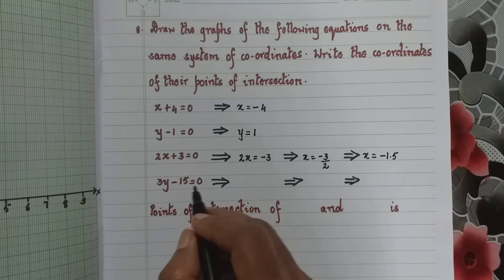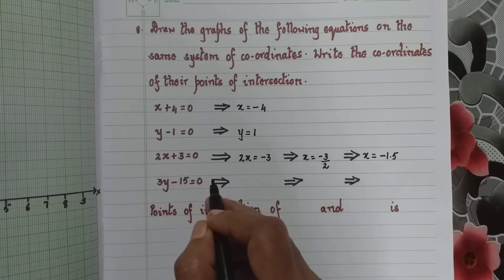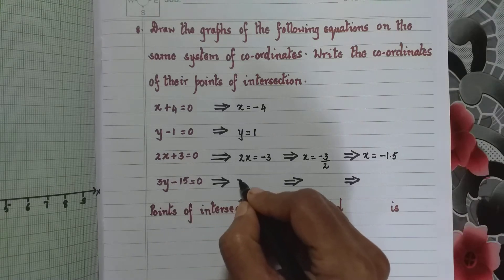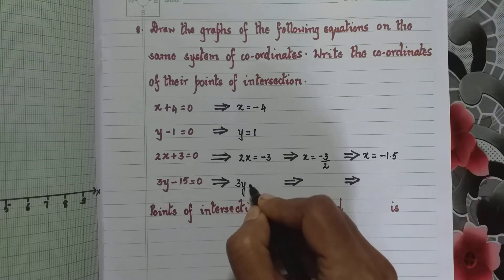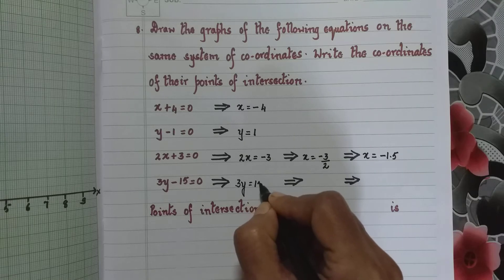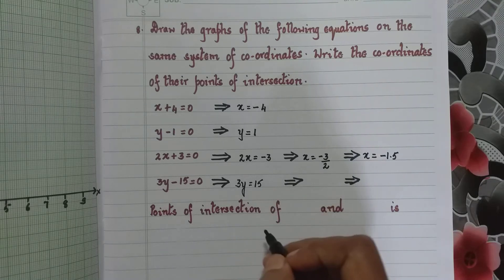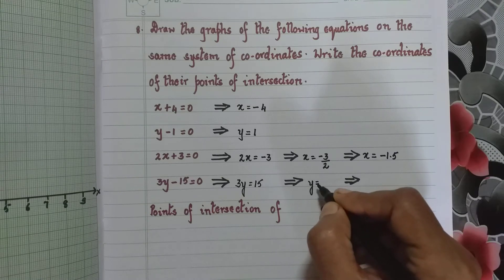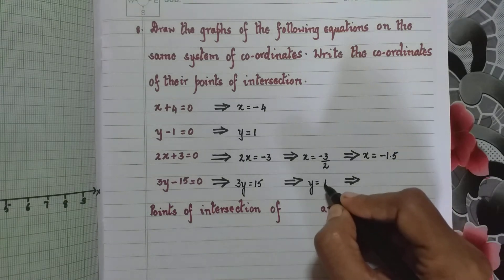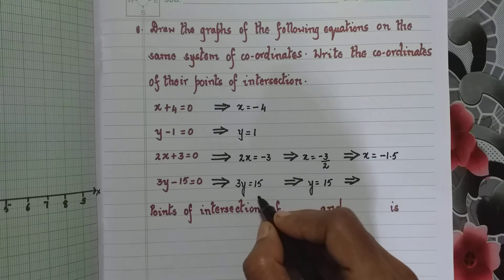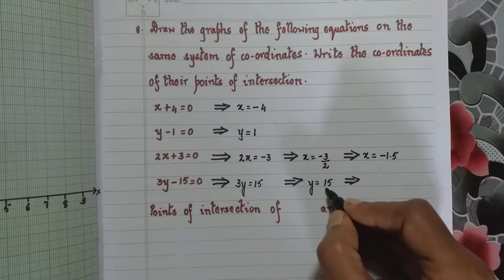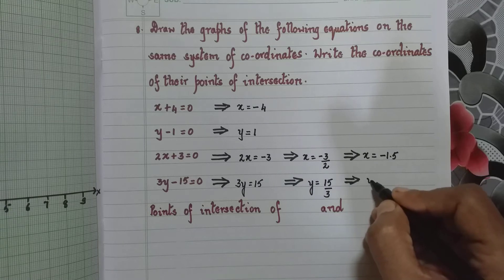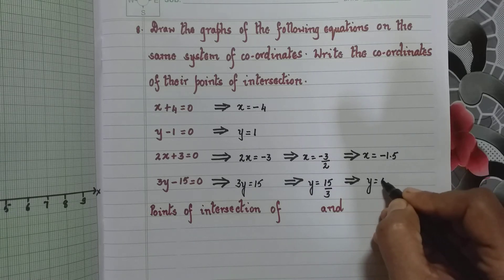Next, 3y minus 15 equal to 0. Taking minus 15 to the other side gives 3y equal to 15. Dividing both sides by 3, since 15 upon 3 is 5, therefore y equal to 5.